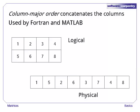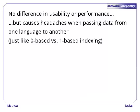In contrast, column major order concatenates the columns. Fortran does this, and MATLAB follows along. There's no real difference in performance or usability, but these differences cause headaches when data has to be moved from one programming language to another. For example, if your Python code wants to call an image processing function written in Fortran, you have to be careful about how data is ordered, just as you have to be careful about zero-based versus one-based indexing.